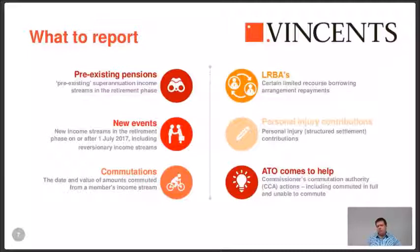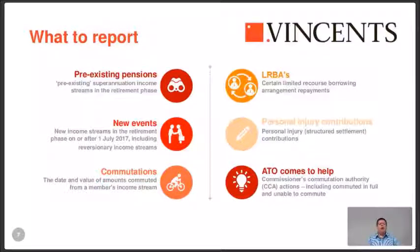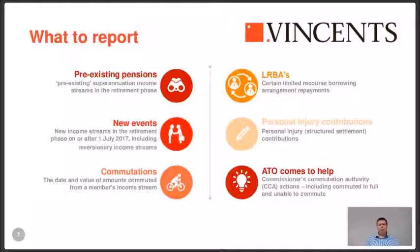Certain LRBA arrangements must also be reported — specifically where related parties are involved or where pensioners have an LRBA. Personal injury contributions, such as structured settlement payments where a court awards a million dollars for pain and suffering, can go into super with no caps and are excluded from the 1.6 million dollar threshold — they get reported via TBAR when the contribution is made. Finally, when the ATO issues a commissioner's commutation authority saying you've got too much and must roll some back, you still have to report that event even though the tax office already know about it.